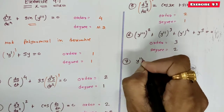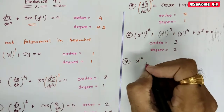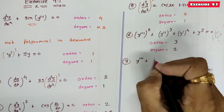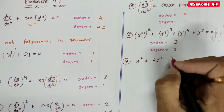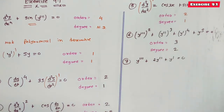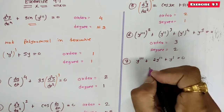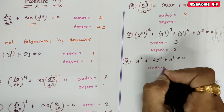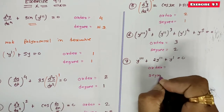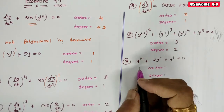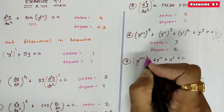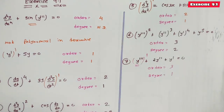Equation 7: y''' + 2y'' + y' = 0. The highest order derivative present in the equation is order 3, and its power is 1, so order is 3 and degree is 1.